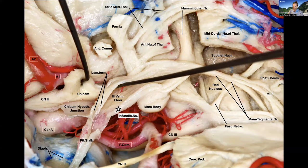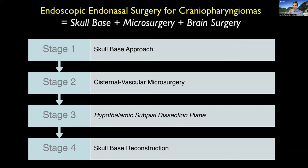When I look at craniopharyngiomas, I divide the operation into four different stages. Stage one is the skull-base approach. Stage two is what we call the cisternal or vascular microdissection. Stage three is the hypothalamic subpial dissection technique, which I'll show you. And then finally, stage four is the reconstruction.